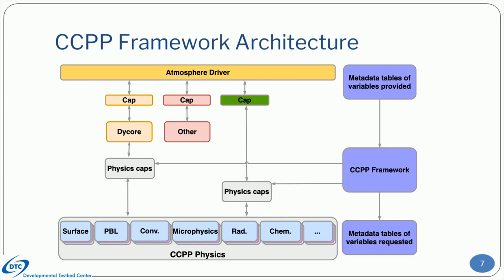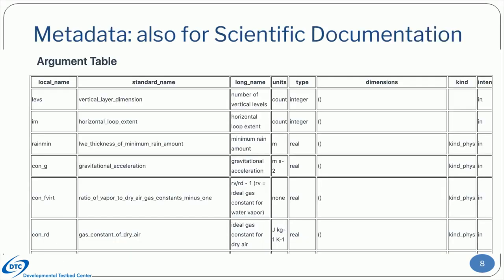The CCPP framework supports hierarchical system development because it is interoperable. For example, the physics can work with a variety of host models, ranging from simple to complex. The metadata mentioned in previous slides is also used to generate the scientific documentation. The metadata associates each variable local to a physics scheme to a standard name, a long name, units, type, dimensions, kind, and intent. This makes each physics scheme more understandable by users and developers.